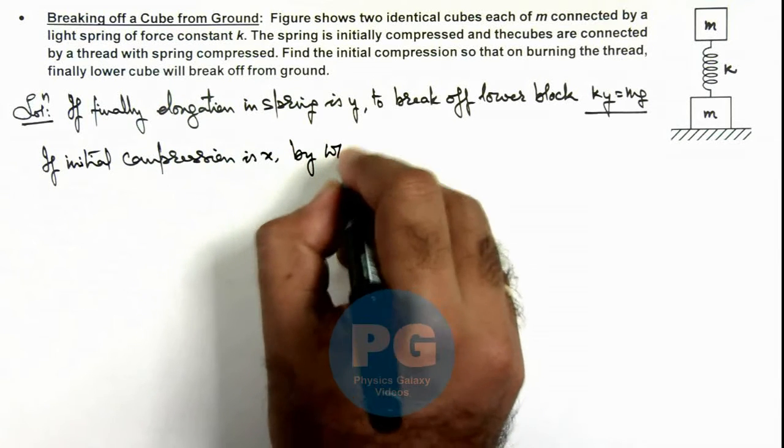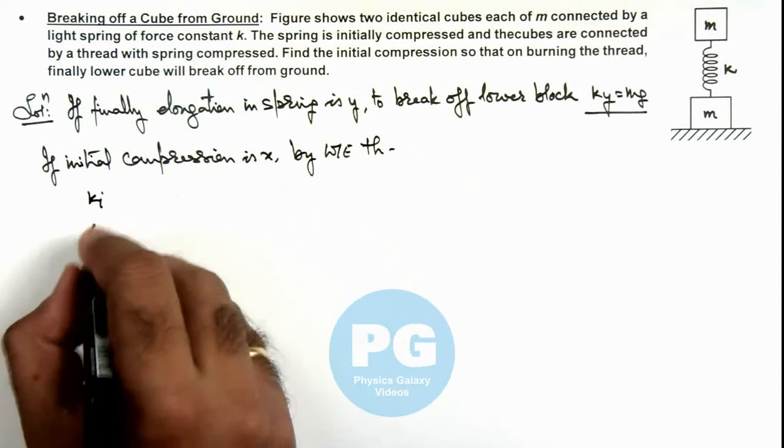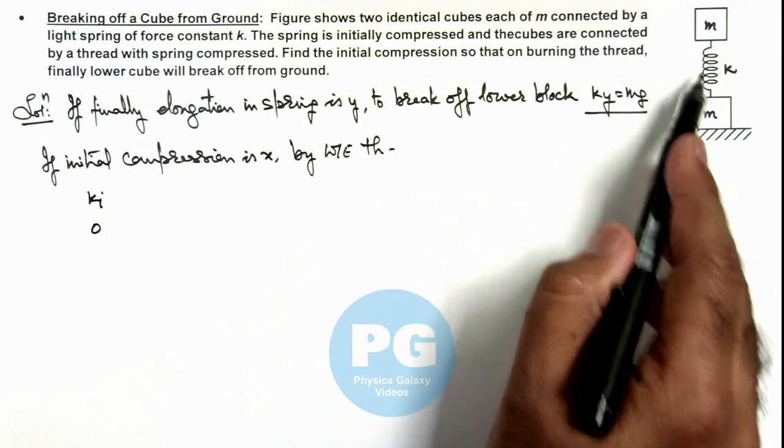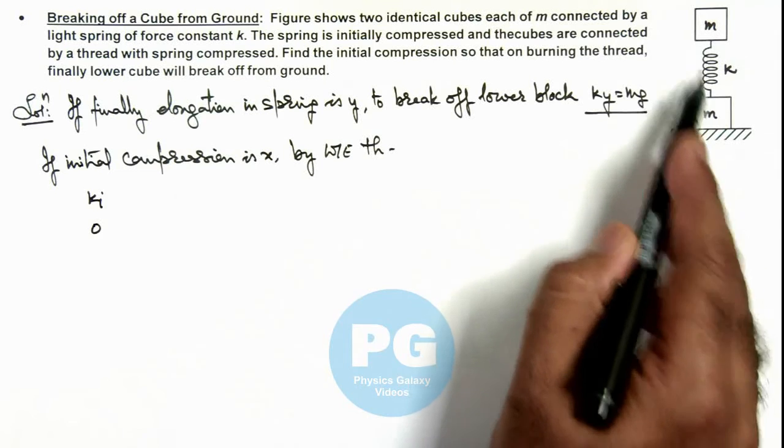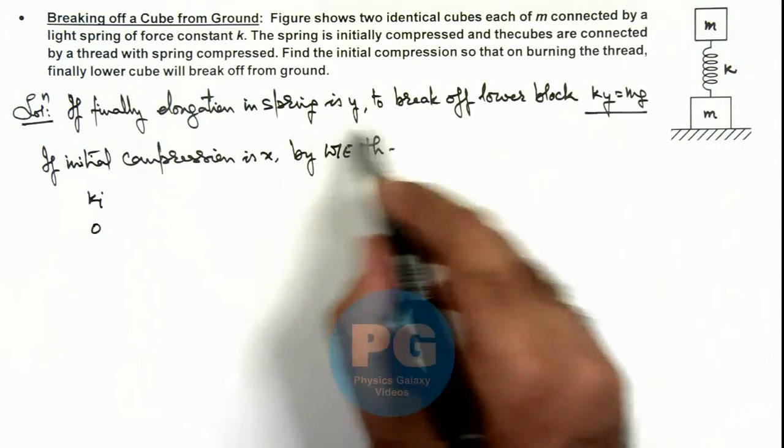By work energy theorem, we can write the initial kinetic energy in the blocks is zero. If initial compression is x, then due to the spring, block m will bounce to a height x plus y, because we have taken y as the final elongation.